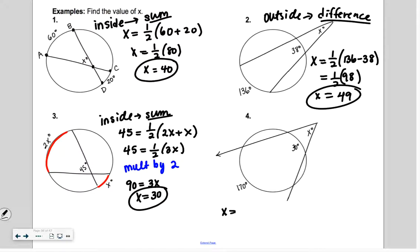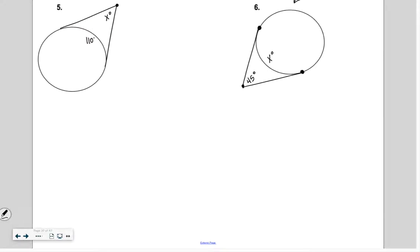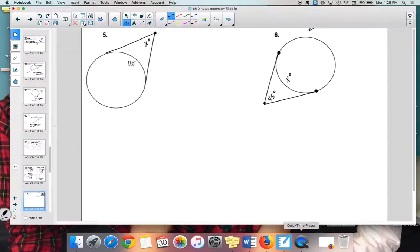Let's try this. X is equal to one half of 170 minus 30. So we end up getting what? One half of 140, which is 70. That's it. Think about these two. They're a little tricky. Try to figure out number five. I'm going to give you a couple minutes to think about it.